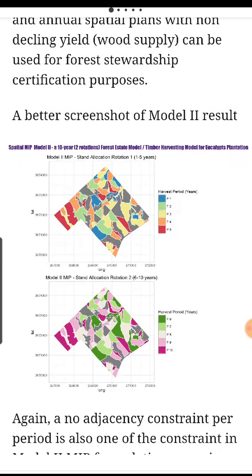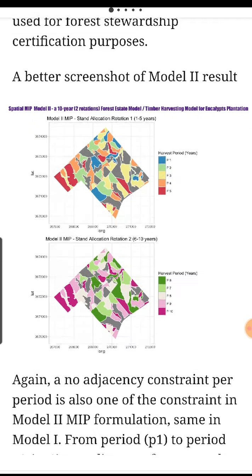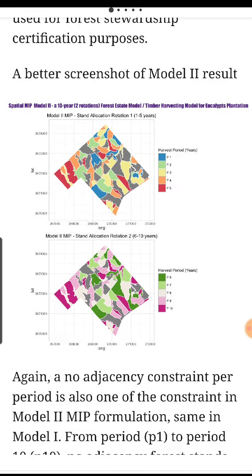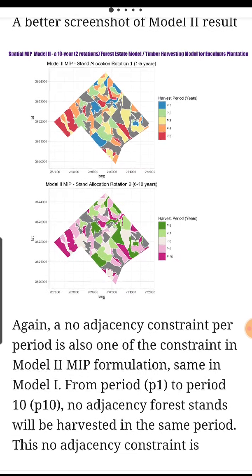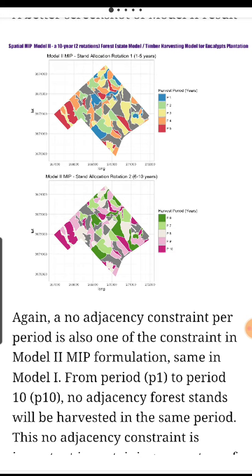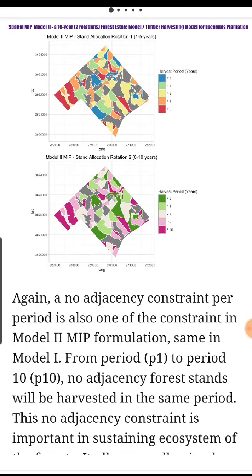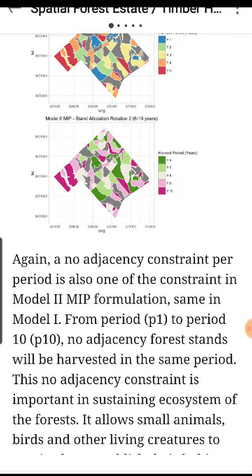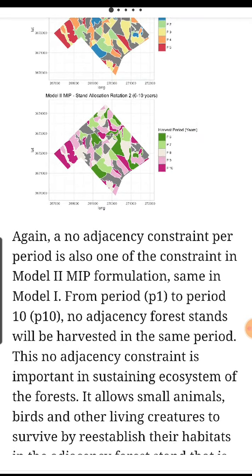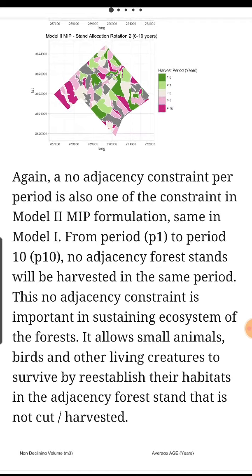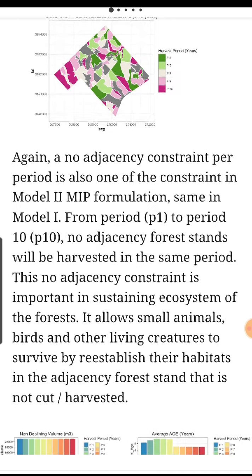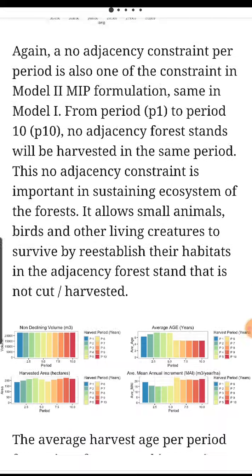A better screenshot of Model 2 result. Again, the no-adjacency constraint per period is also one of the constraints in the Model 2 MIP formulation. From period P1 to period P10, no adjacent forest stands will be harvested in the same period. This no-adjacency constraint is important in sustaining the ecosystem of the forest — it allows small animals, birds, and other living creatures to survive by establishing habitats in the adjacent forest that is not cut or harvested.